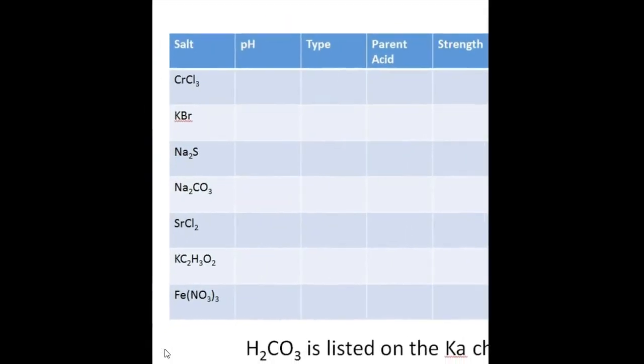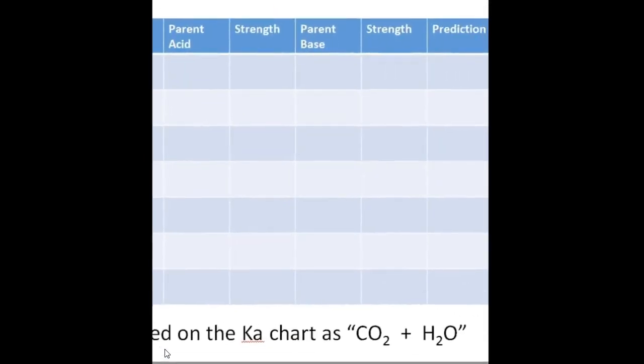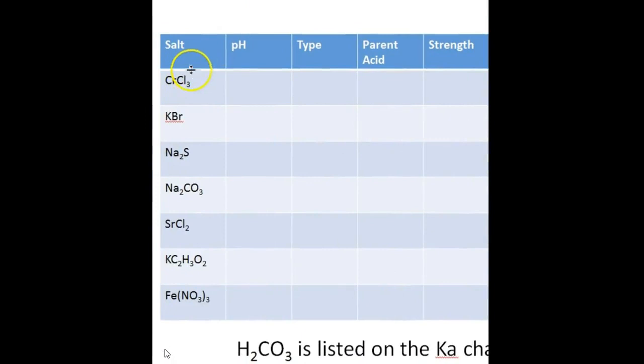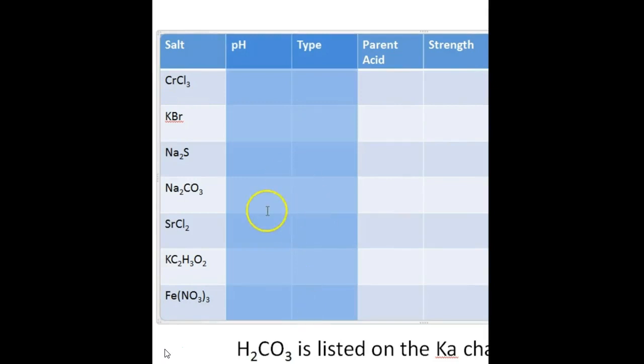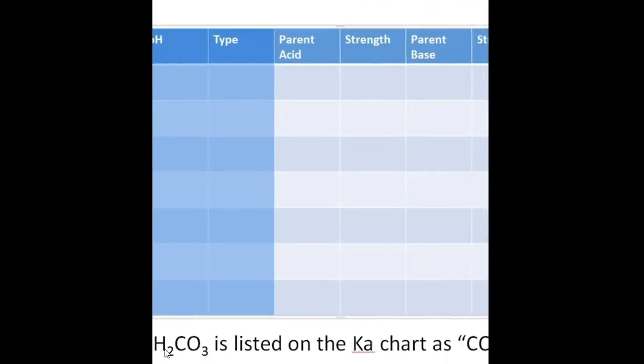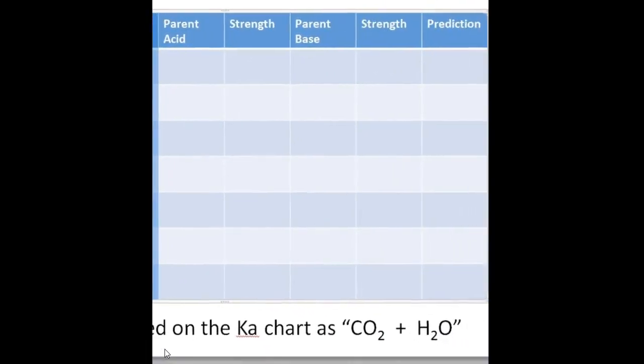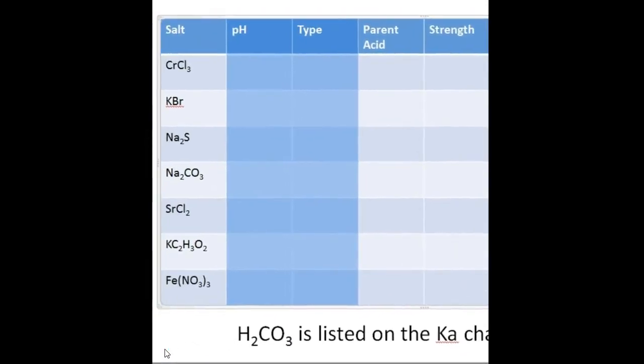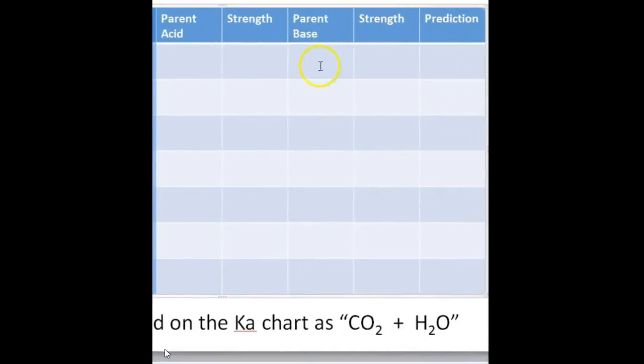On the next page of your lab, you've got this chart. These first two columns we're going to ignore for a little while. What we're going to focus on is parent acid, parent base, and the strength of the acid in the prediction. You're going to take CrCl3, split it apart into its two ions, recreate the acid, put it here, write strong or weak. Then you'll do the same thing for the parent base, strong or weak. Then you'll compare these two and determine if the solution should be acidic, basic or neutral.